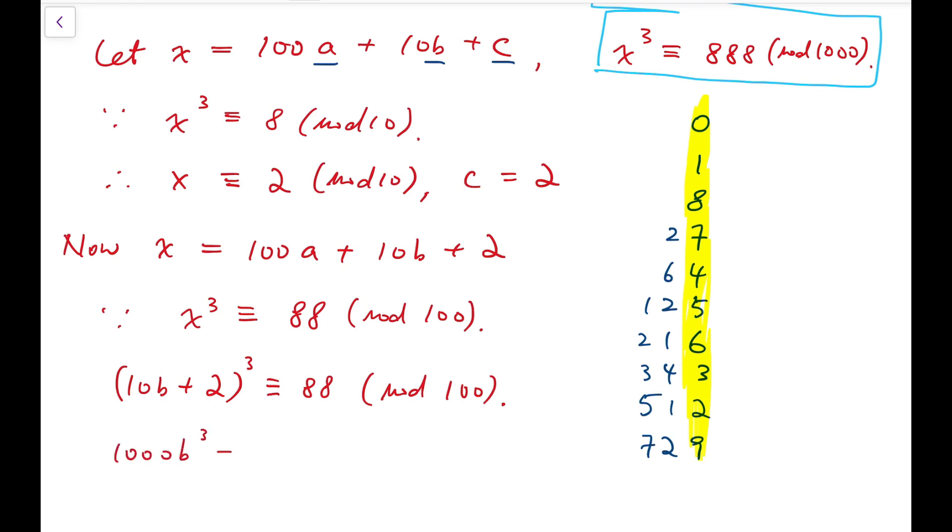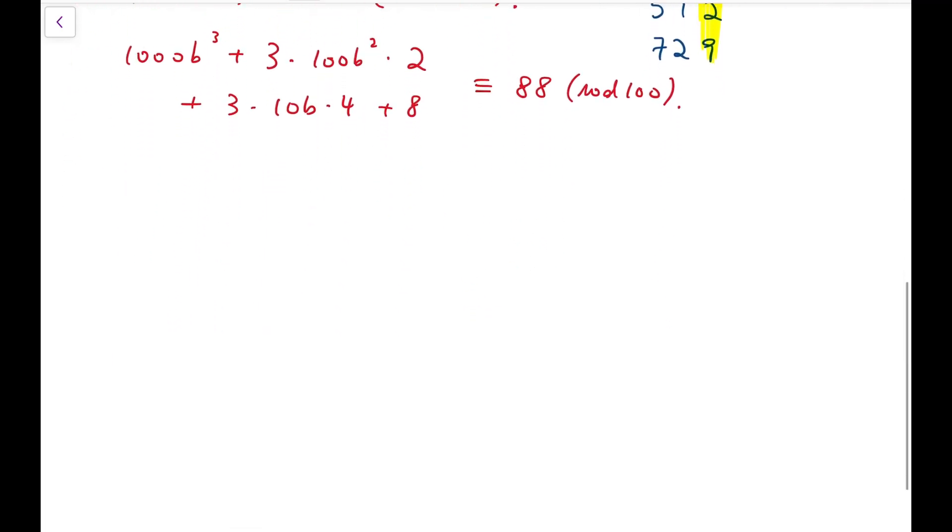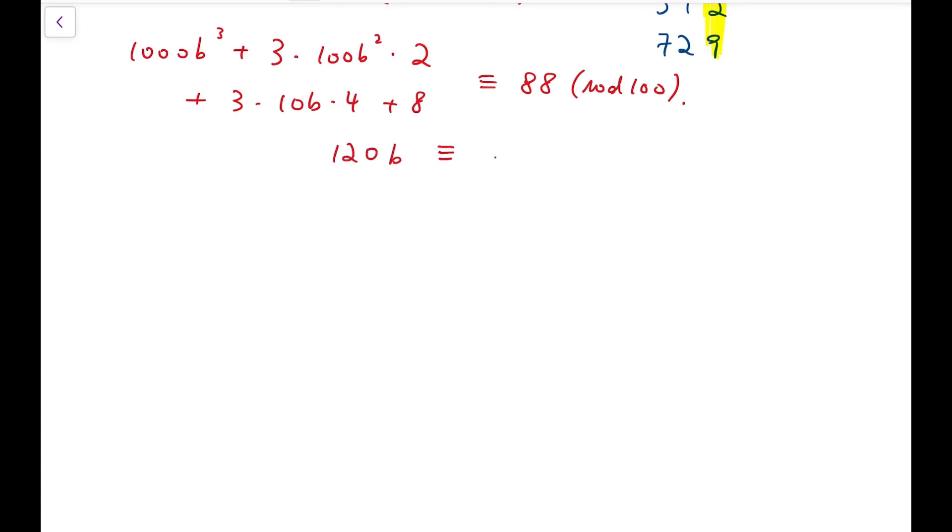Now, using the binomial theorem, 10,000 b cubed plus 3 times 100 b squared times 2 plus 3 times 10 b times 4 plus 8 is congruent to 88 mod 100. Now, simplifying, we know that 120 b is congruent to 80 mod 100. So, to simplify things, I'm going to rewrite this back into an equation, but not simply congruent in modular arithmetic.